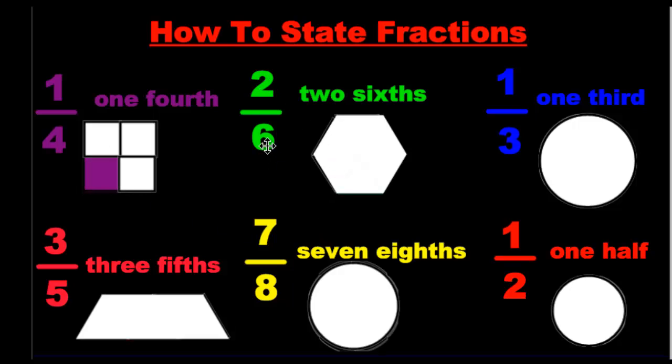Next one. We don't say 2 over 6. We say 2 sixths and put that ths at the end, 2 sixths. So denominator says 6. I show my 6 pieces and I got to choose any 2 of them. I have to choose any 2. Doesn't matter.